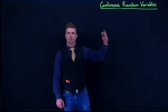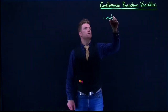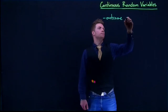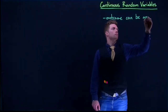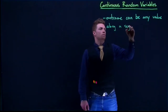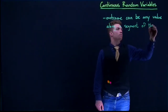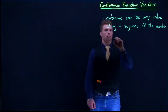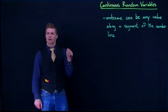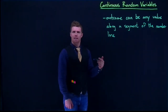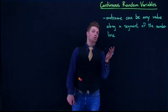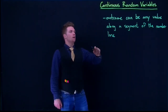With continuous random variables, the outcome can be any value on a specific segment of the number line. That's the definition of a continuous variable — a numerical piece of data that is continuous. For example, I could weigh 180 pounds, 180.1 pounds, or 180.12143 pounds. So the outcome can be any value along a segment of the number line.